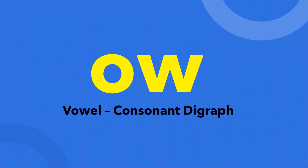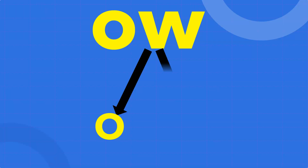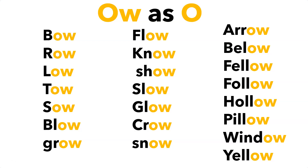OW vowel consonant digraph. OW has two sounds: the first sound is 'oh' and the second sound is 'ow'. Let's read some examples for the practice of these sounds.